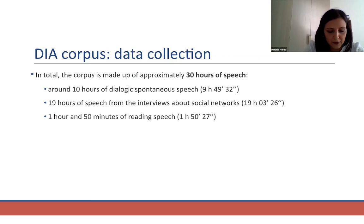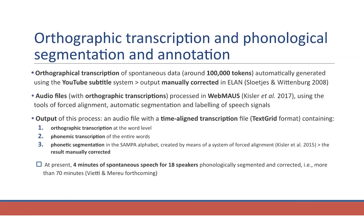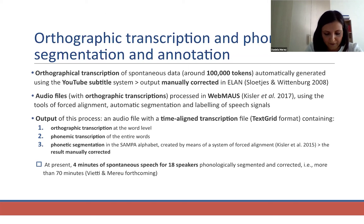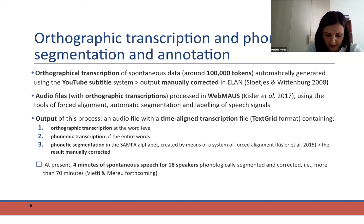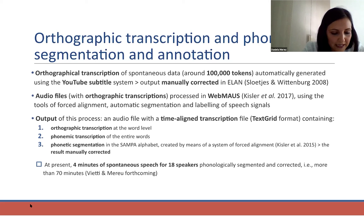Overall, DIA Corpus comprises approximately 30 hours of speech: around 10 hours of spontaneous speech, 19 hours from social network interviews, and around 2 hours of reading speech. Currently only the spontaneous speech data have been orthographically transcribed, consisting of around 100,000 tokens. A first orthographic transcription was created using the YouTube subtitle transcription system, then manually checked and corrected.